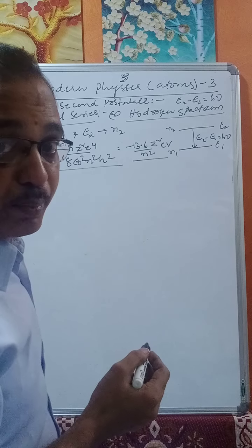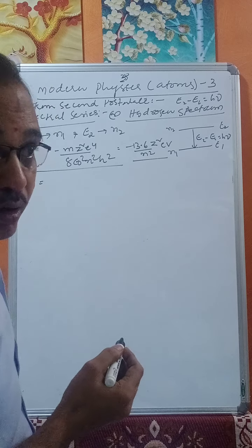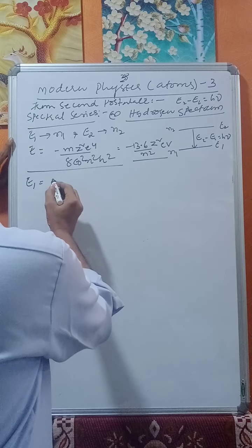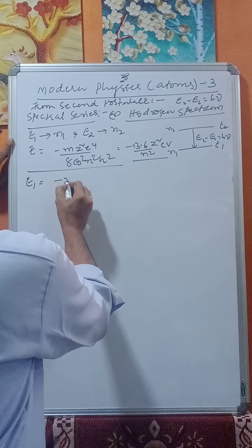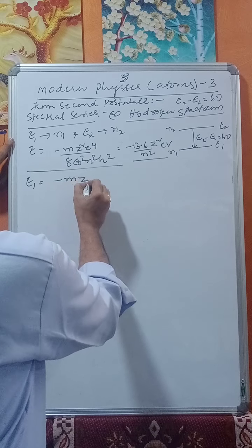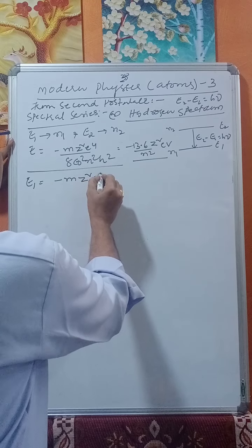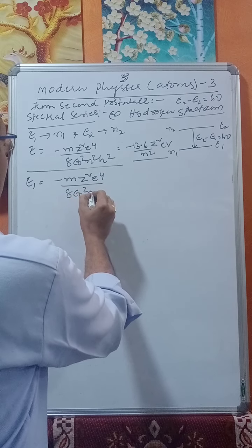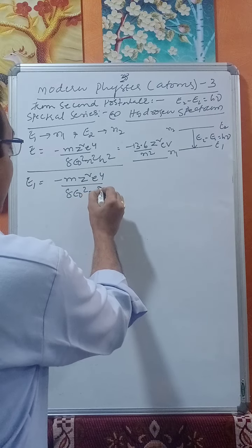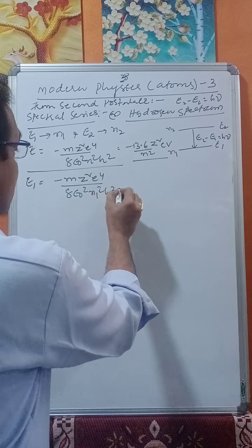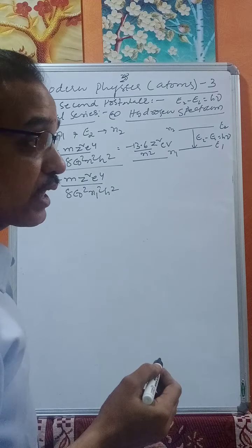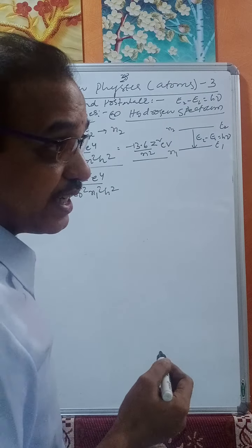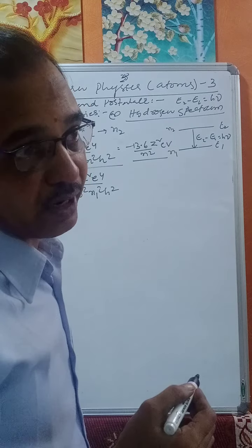Now, if E1 is the energy corresponding to principal quantum number n1, then E1 equals minus m·z²·e⁴ divided by 8·ε₀²·n1²·h².